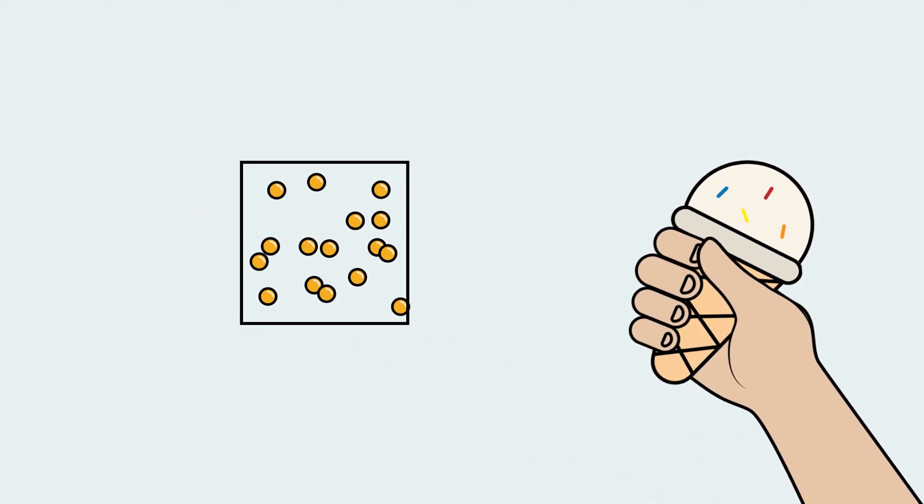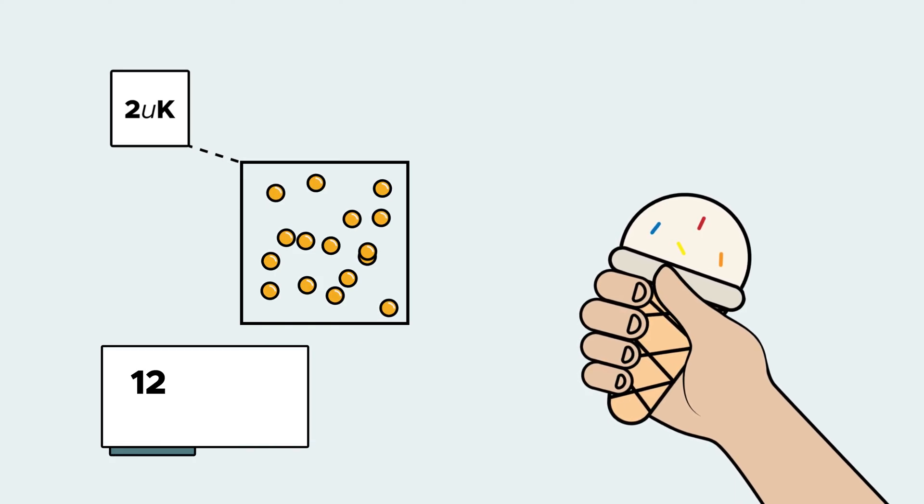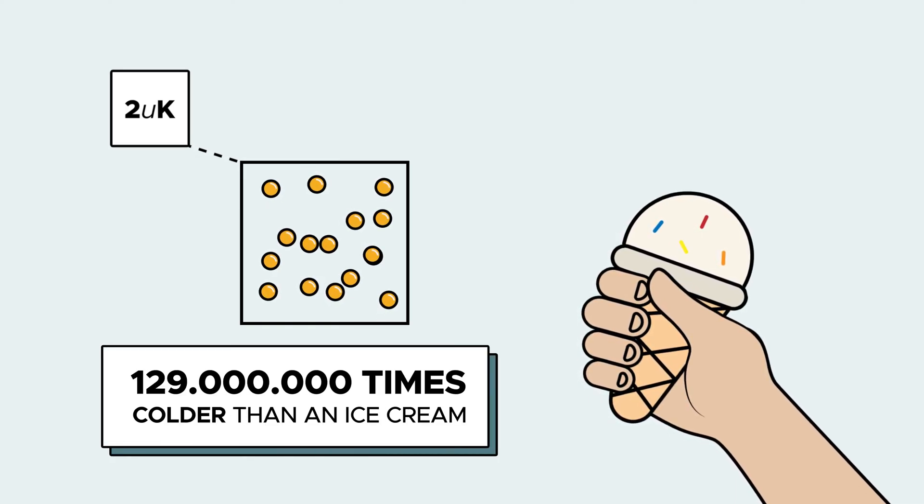At Atomionics, we regularly cool down atoms to 2 microkelvin. That's 129 million times colder than an ice cream.